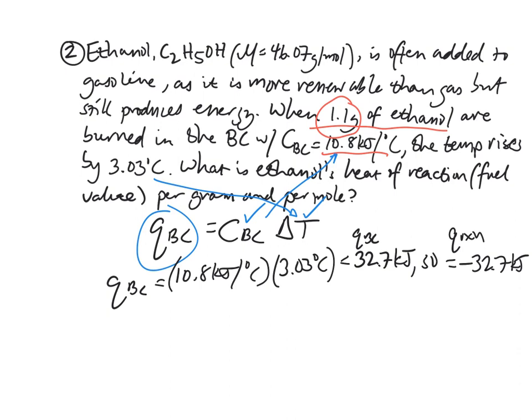That, however, does not answer either question. The two questions we're being asked are to find it per gram of ethanol and per mole of ethanol. Well, that's not too difficult, because we got 32.7 kilojoules out of 1.1 grams. So if we simply do this division, we'll find how much one gram would give off. So if we divide that, we get negative 29.7 kilojoules per gram. So there's one answer.